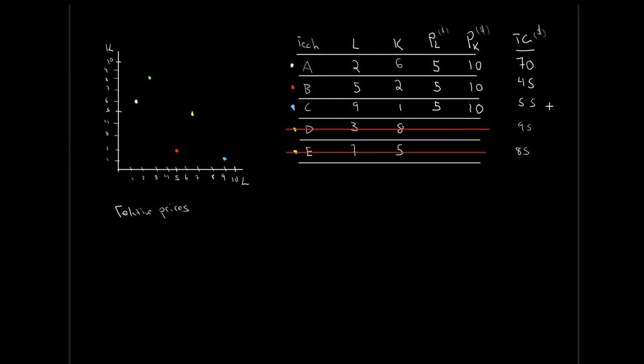Technology B gives us the cheapest cost of production for the same amount of output, sold at the same price — meaning I get the highest level of profit possible. So which technology do I adopt in this case? Technology B. We can also take a look at this with isocost curves and show that it does have the lowest isocost.